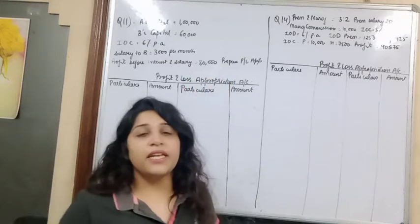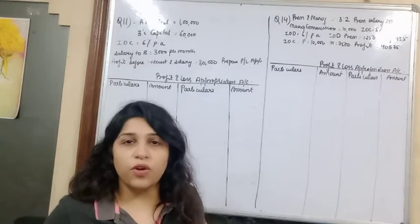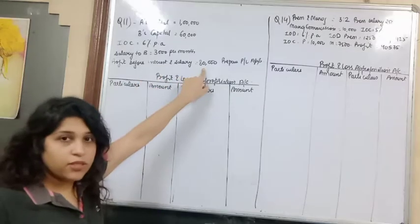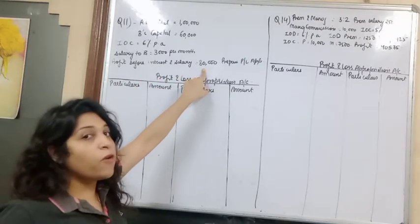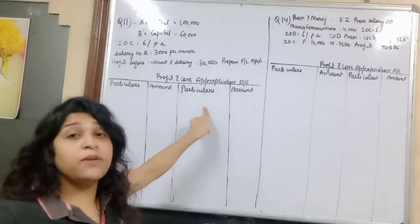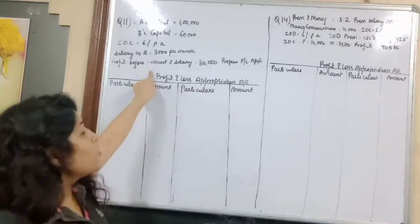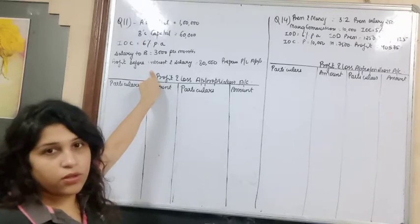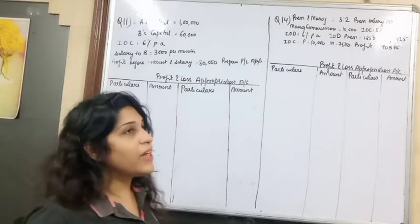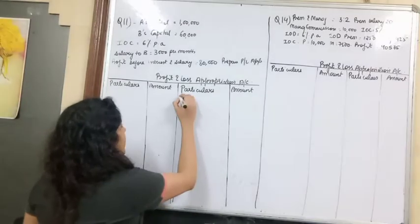First thing in P&L appropriation account questions, we need net profit. If you can see, profit is given as 80,000. We don't need to change anything. The profit given here is before, so we'll take net profit.